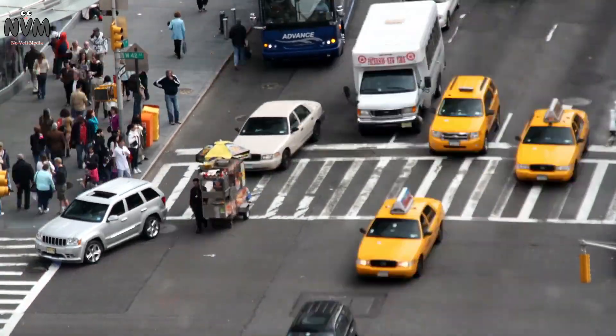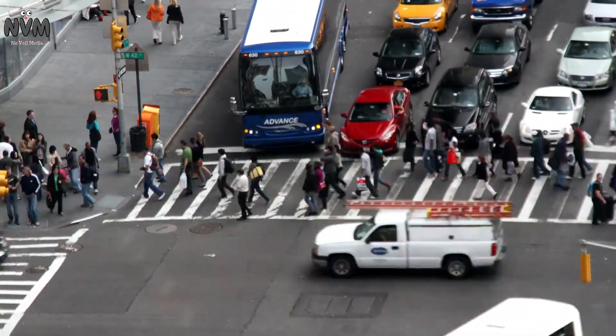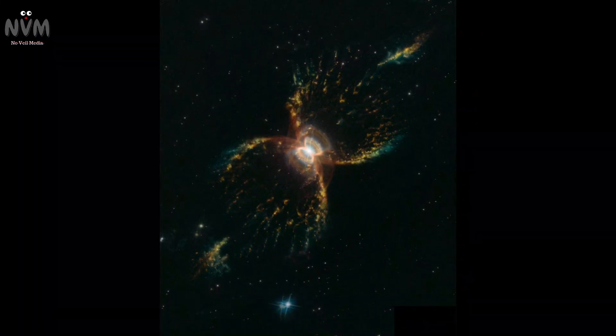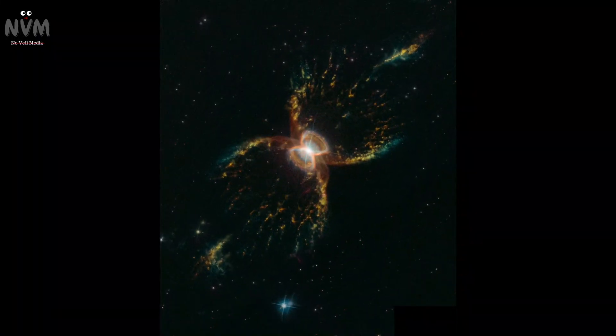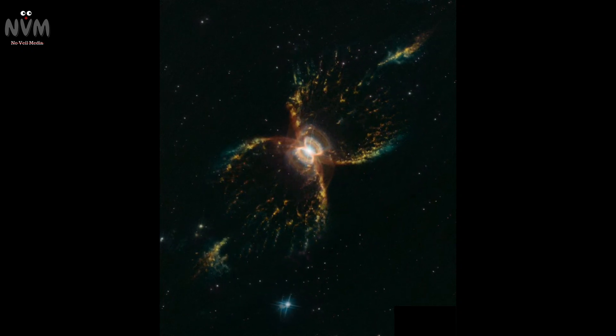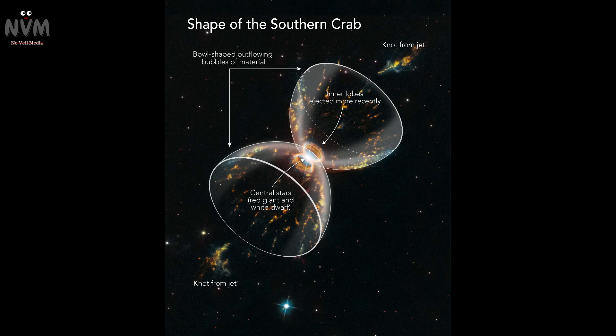Although supernovae may mark the dramatic conclusion of a star's life, they also set the stage for new beginnings. The explosion scatters the star's outer layers into space, enriching the interstellar medium with heavy elements. These materials can then clump together, forming the building blocks for the next generation of stars, planets, and even life.